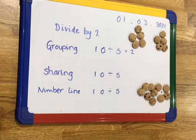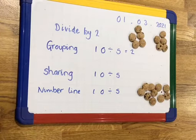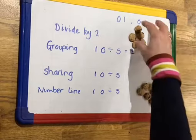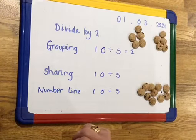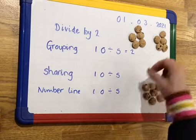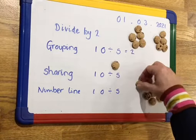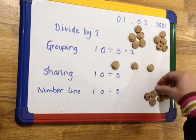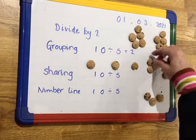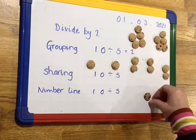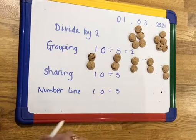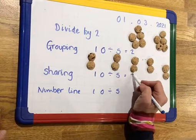If I was sharing, I know how many groups I'm going to be making but I don't know how many I'm going to get each. When I was grouping I knew how many was going into each group. This time I don't know how many is going into each group, but I'm going to share it between 5 groups. Let me create my 5 groups — the sharing method. And everybody gets 2, so 10 divided by 5 is 2.